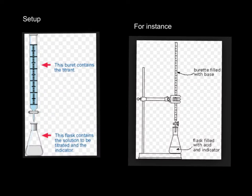So the setup for a titration: you have a burette. You probably remember during the measurement lab, we looked at a burette and learned how to read the volumes. In the burette, you put a solution called the titrant — it's the thing you're adding. And in this Erlenmeyer flask, you put the solution that needs to be titrated.